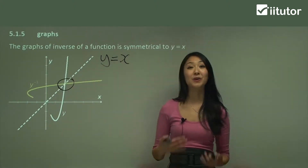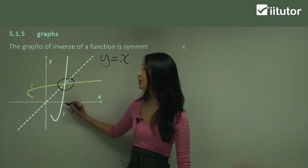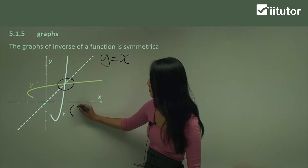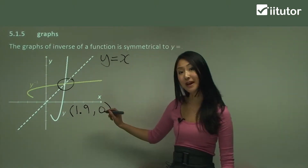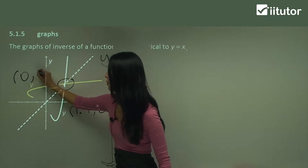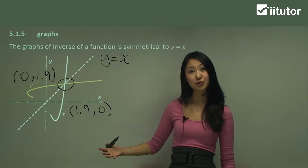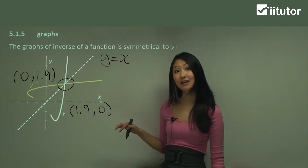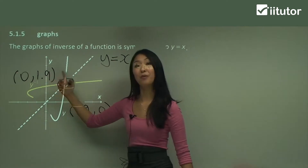Now the other thing about drawing your inverse of a function is that your x-intercept for the original function will become your y-intercept. So for example, this point here is approximately 1.9, 0, which means that this y-intercept here is going to be the point 0, 1.9. Because if you think back to the very first module on inverse functions, it said that when we find the inverse of a function, the set of values flip over — so 1.9, 0 becomes 0, 1.9.